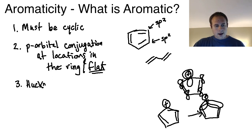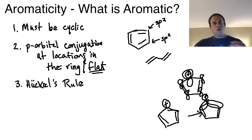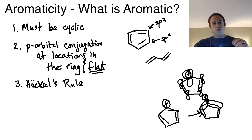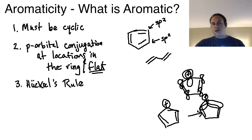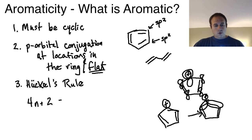Rule number three is Hückel's rule, which is derived from molecular orbital theory. In MO theory, you have bonding orbitals, potentially non-bonding orbitals, and anti-bonding orbitals. Aromatic compounds fill their pi electrons into only bonding orbitals. If a cyclic conjugated system has pi electrons in non-bonding or anti-bonding orbitals, it is classified as anti-aromatic — the complete opposite of aromatic and very unstable. Hückel's rule mathematically states: 4n + 2 = number of pi electrons.